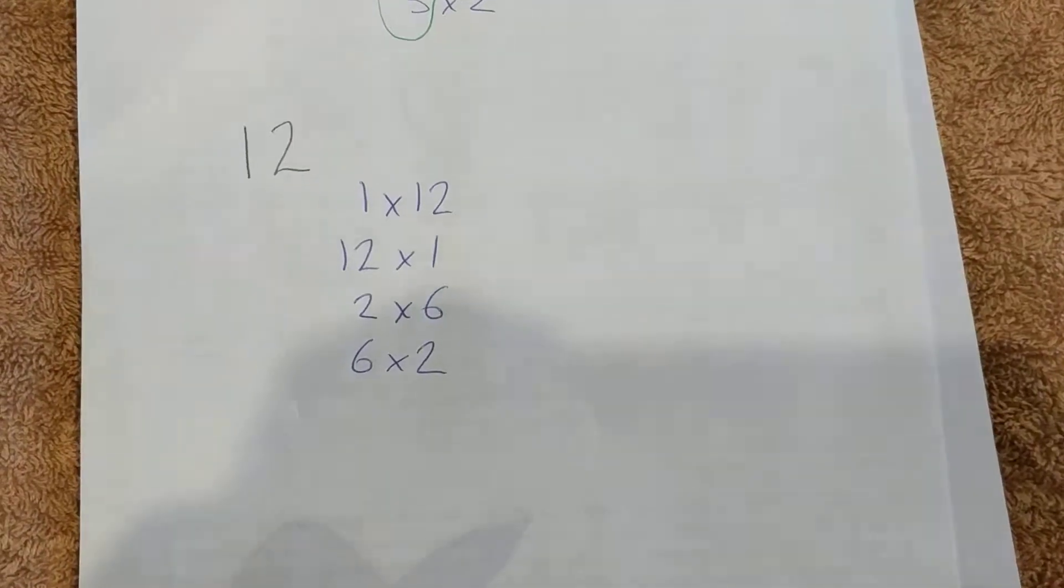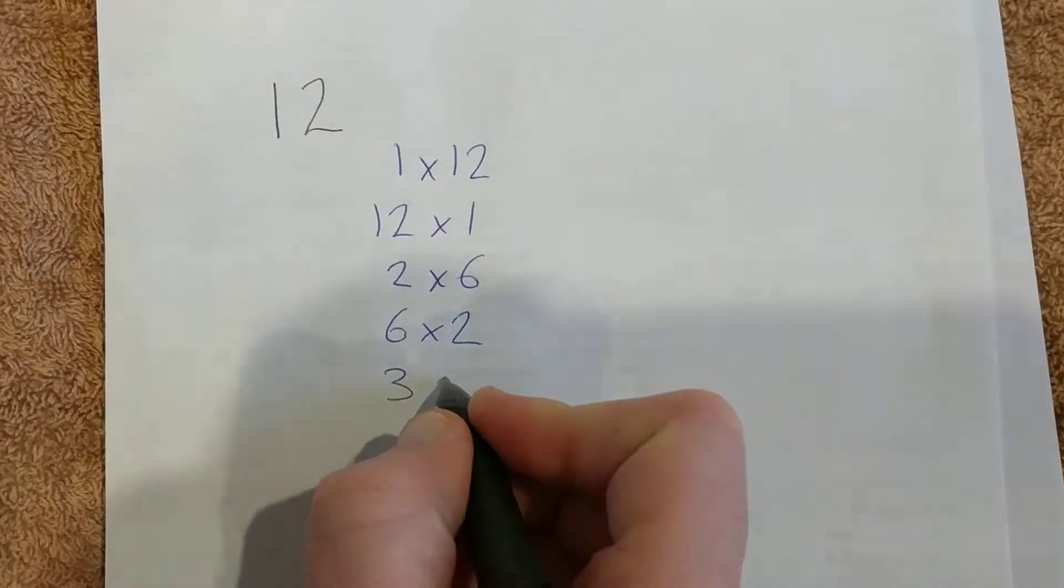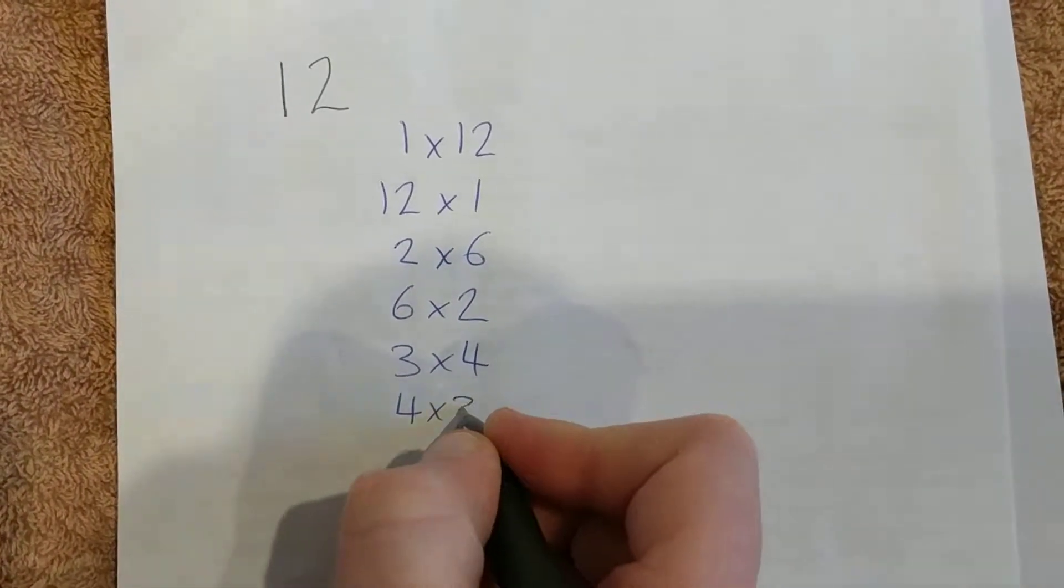Move to 3. Yes, I know my times tables - 3 times 4 equals 12. So 3 is a factor and therefore 4 is also a factor.